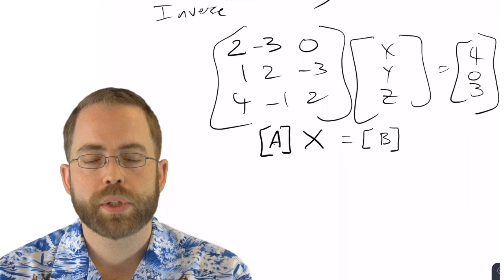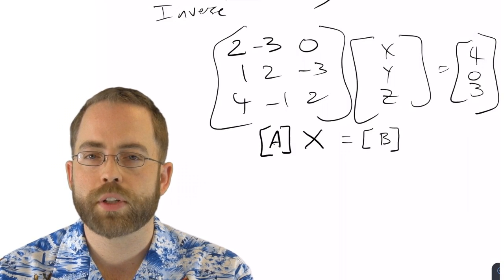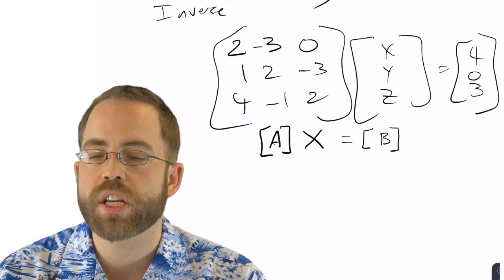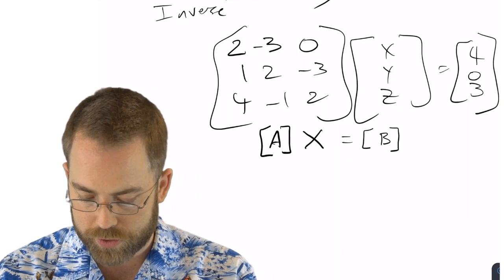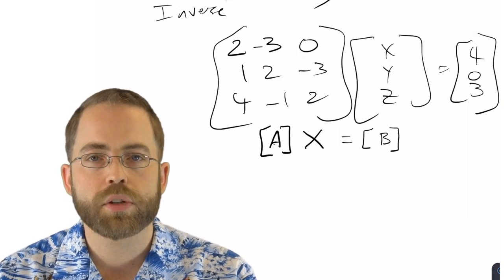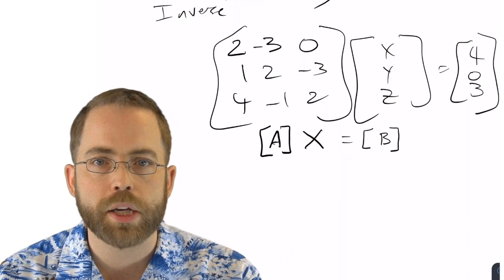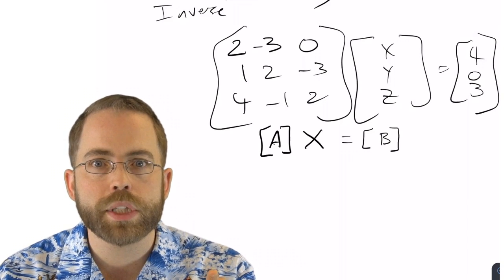Uh-oh. We said last time there is no division. If these were just numbers, then I would be able to simply divide both sides by matrix A. But there is no such thing. There is no matrix division. What are we going to do?